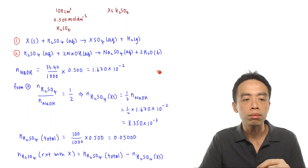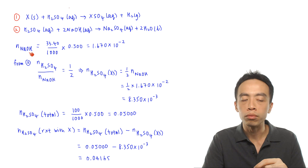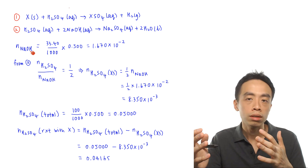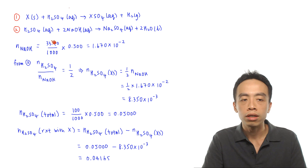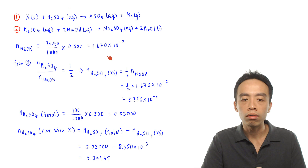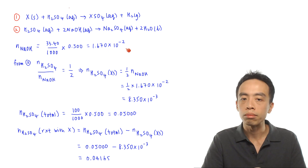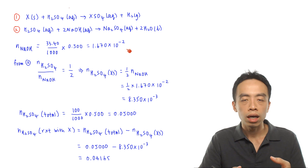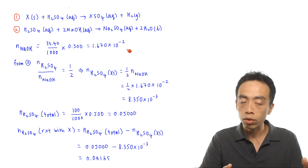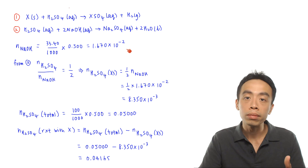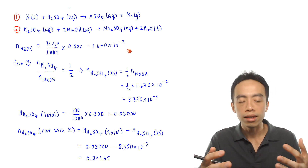The first step is to determine the moles of sodium hydroxide from the titration: 33.4 ÷ 1000 × 0.5 = 1.670 × 10⁻² mol. Once we have this, we use the second equation and its mole ratio to determine the moles of H₂SO₄ in excess.